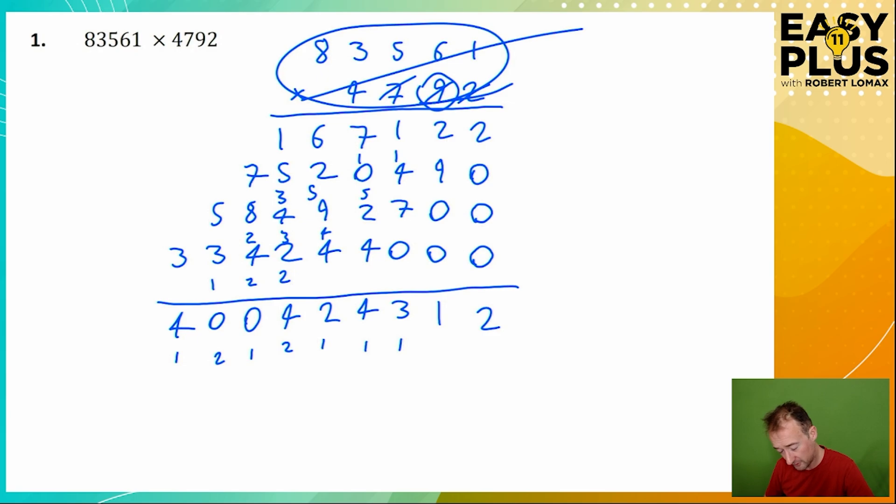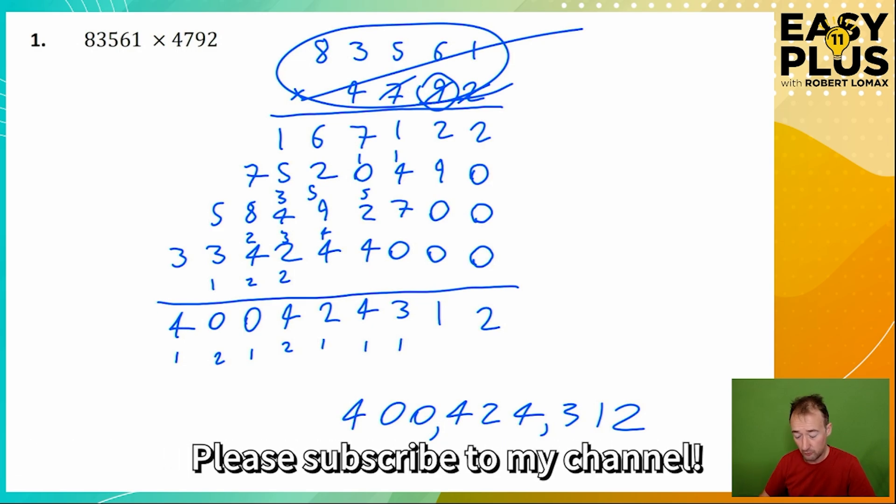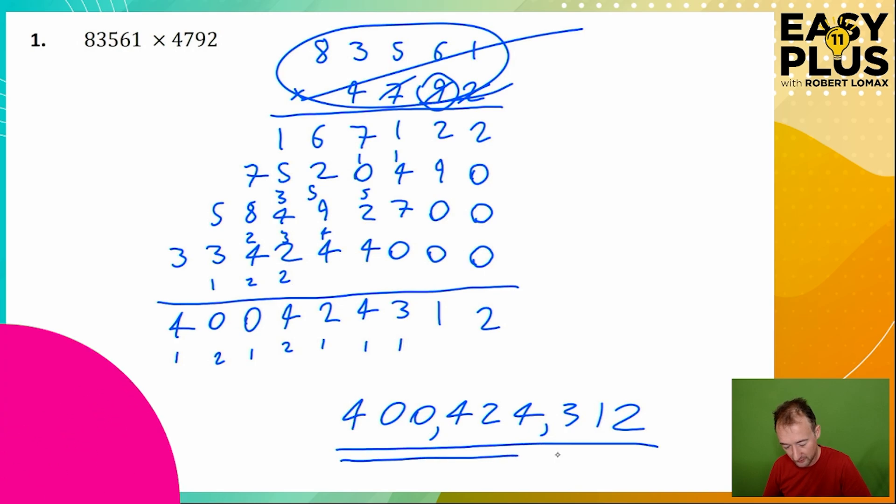Now we just need to copy our answer out as though in the answer space. It's really helpful to count from the right in threes and put commas, and now we know how to say it out loud because each comma is a word. 400 million 424 thousand 312. And that's our answer so let's underline it.